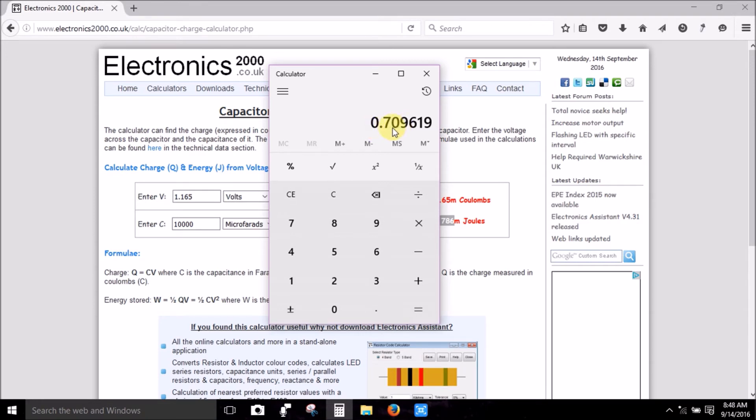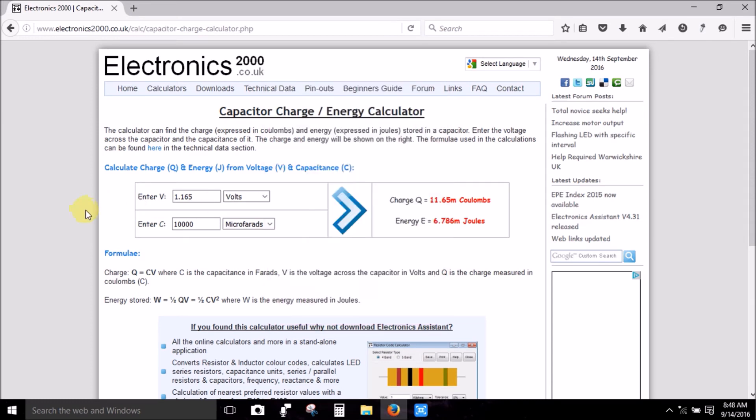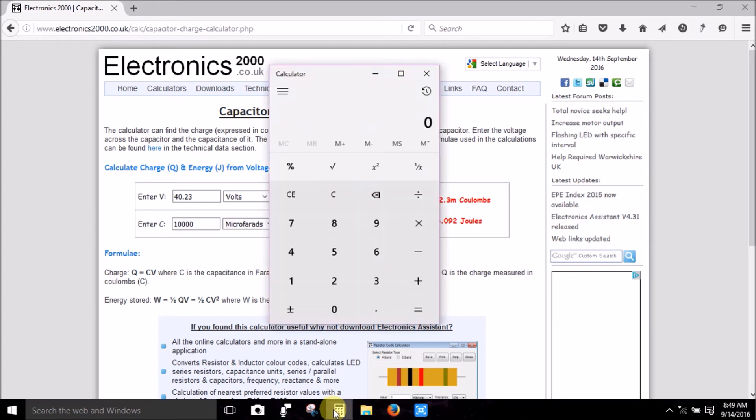Okay, now in our second capacitor, the one that collected all the energy, we ended up with 40.23 volts at 10,000 microfarads, and we see we actually ended up with 8 whole joules, 8.092 joules.